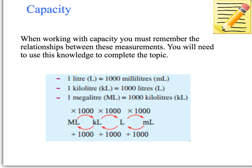When working with capacity, you need to remember this information to convert from one capacity to another. One litre equals 1,000 millilitres. One kilolitre is 1,000 litres. One megalitre is 1,000 kilolitres. Remember when converting lengths: when you multiply, you're going from the larger unit to the smaller unit, and when you divide, you're moving from the smaller units to the bigger units. Multiply right, divide left.